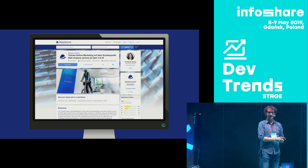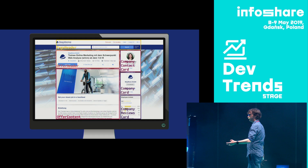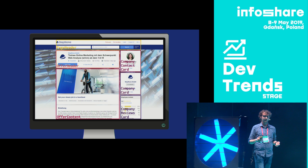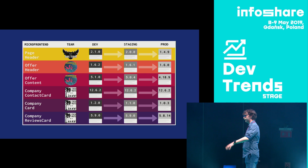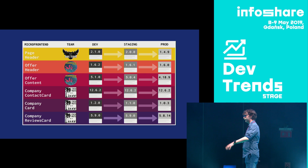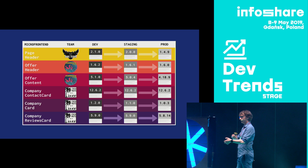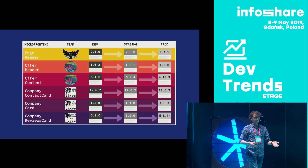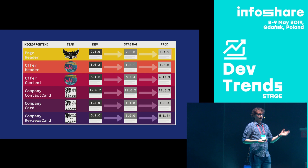Applications created with micro-frontends can look to end users like a regular application, a regular website. But under the hood, it might be built as a composition of separate micro-applications. Each one of those applications has its own codebase, its own code repository, its own pipeline to push code from developer's computer to production through every other environment, its own version on each of those environments at any given point of time, and also its own team responsible for that area.